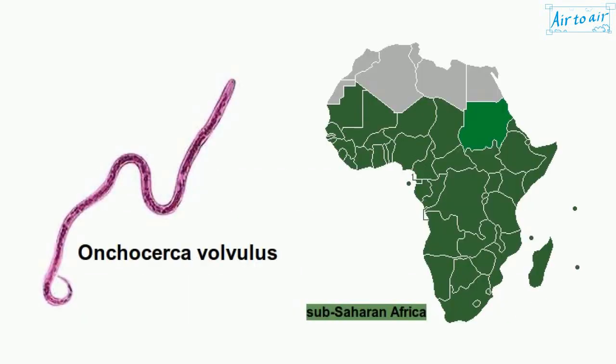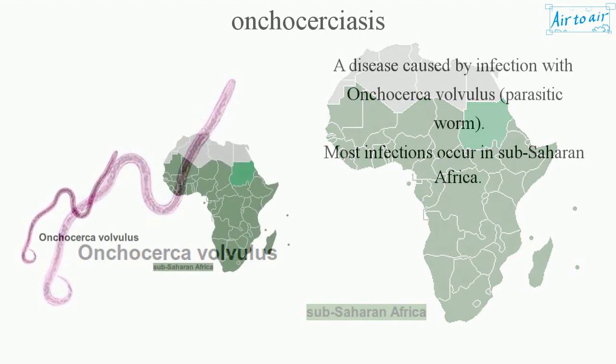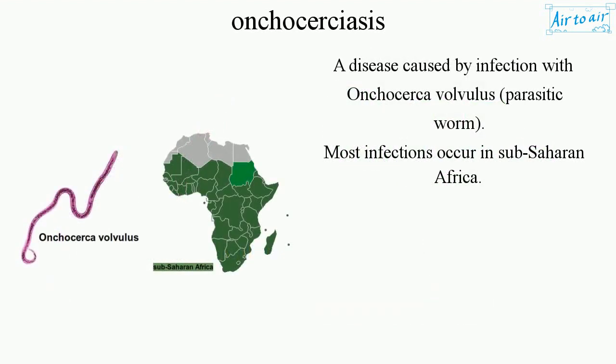Onchocerciasis. A disease caused by infection with Onchocerca volvulus, a parasitic worm. Most infections occur in sub-Saharan Africa.